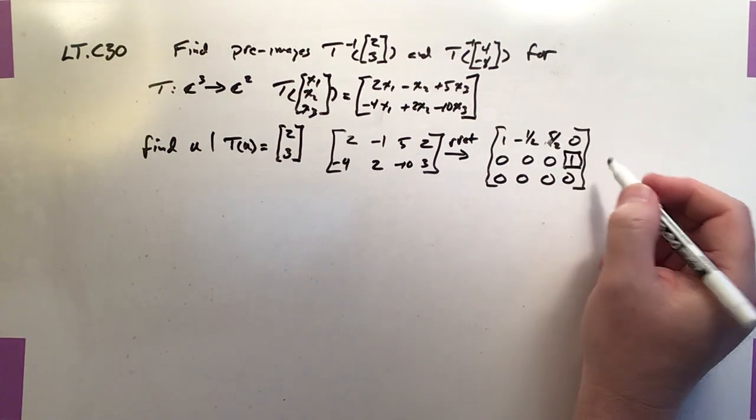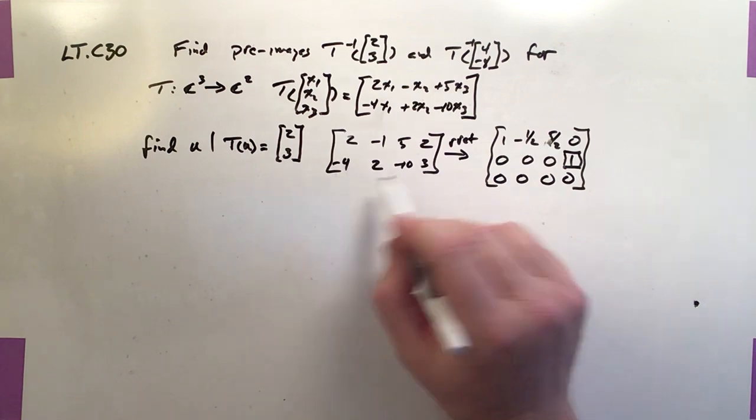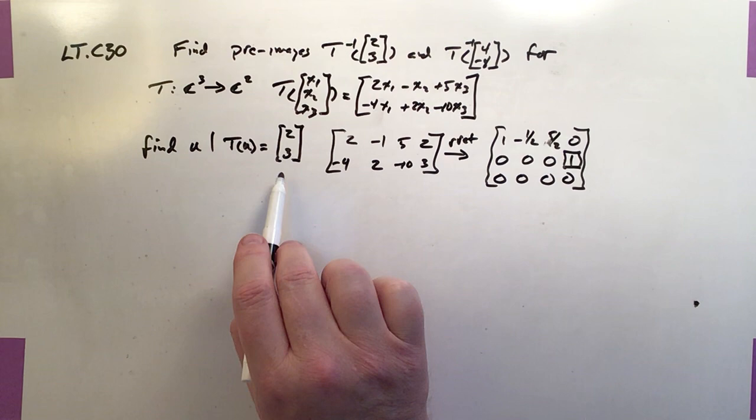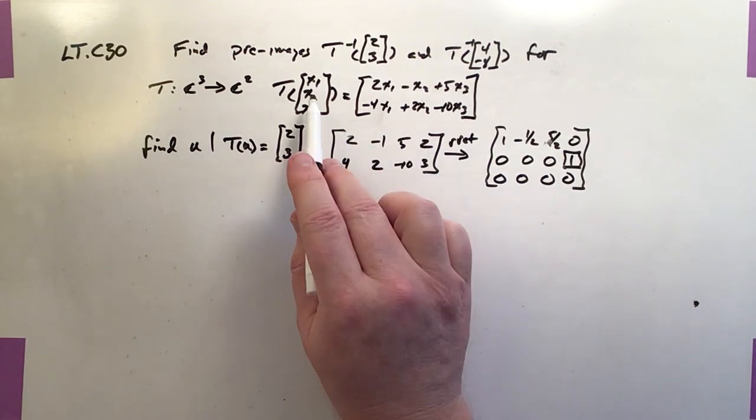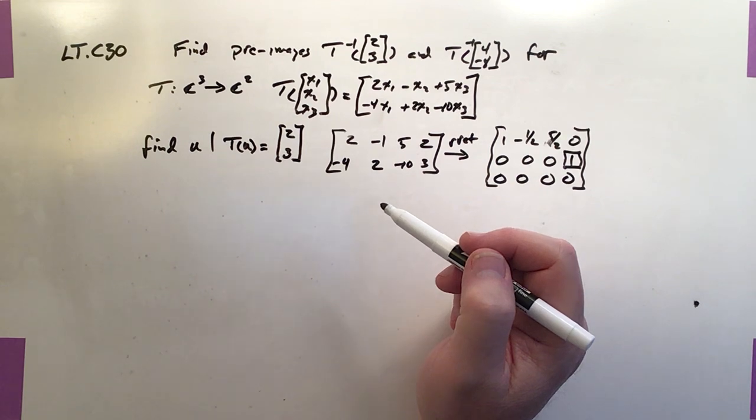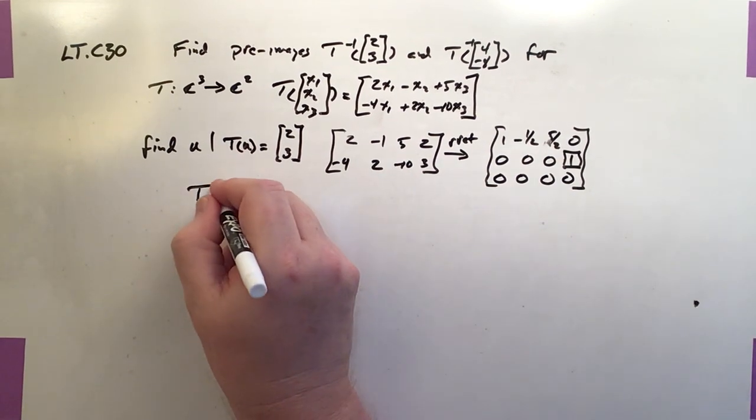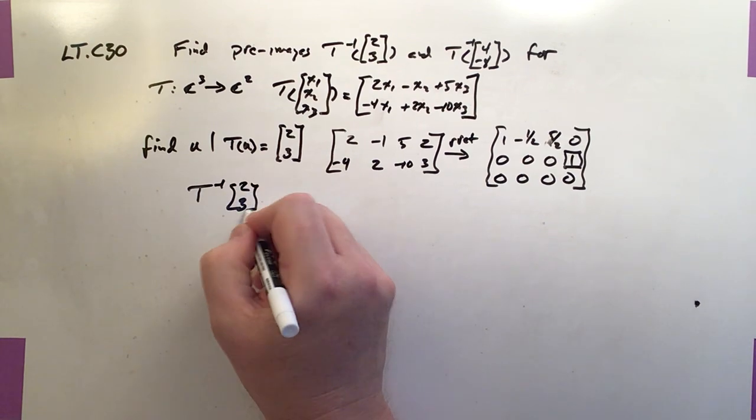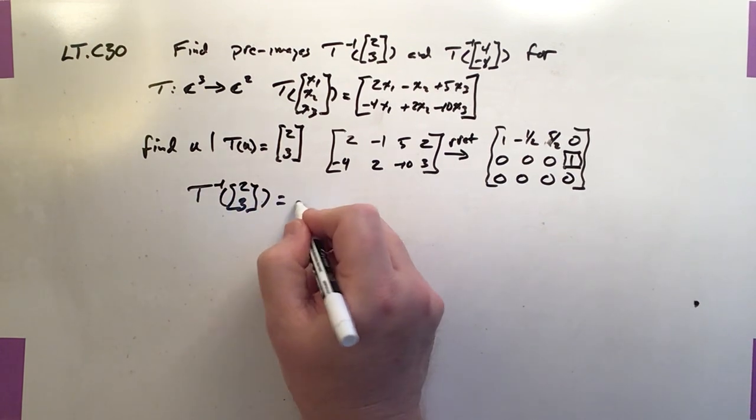And as a result of that, this augmented matrix has no solution, which means there are no pre-images for [2, 3]. There are no values I could select for x1, x2, and x3 where this linear transformation would produce [2, 3]. So when I say, what's the pre-image, T inverse of [2, 3], the only answer to that is it's the null set.